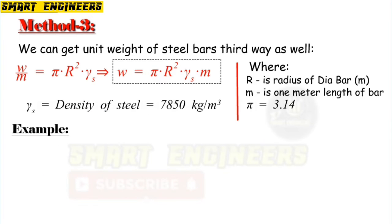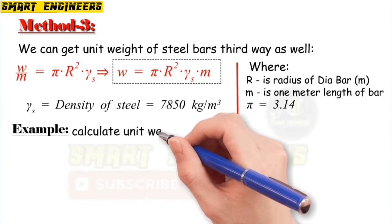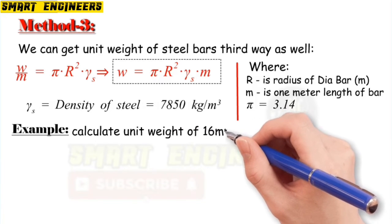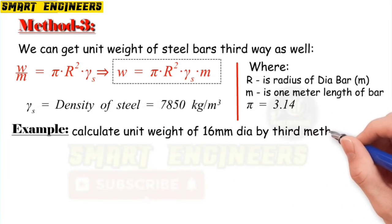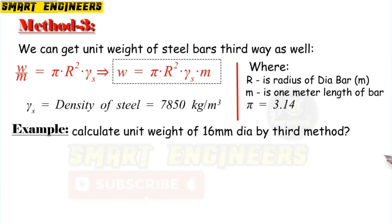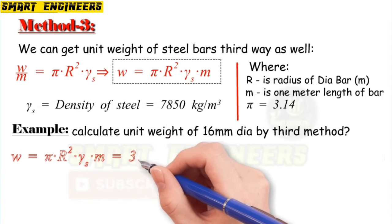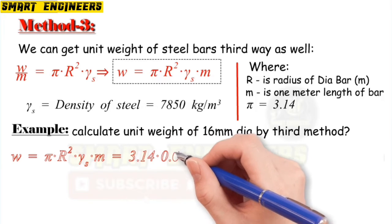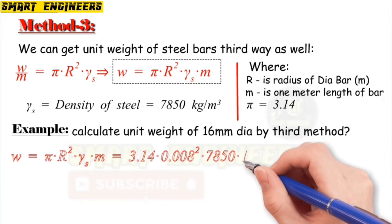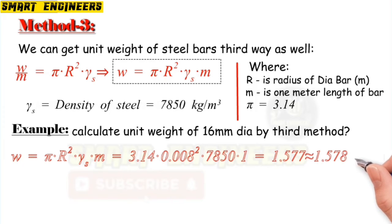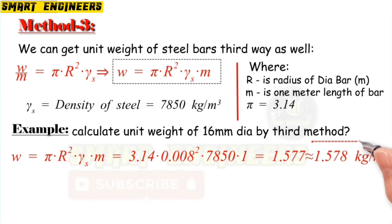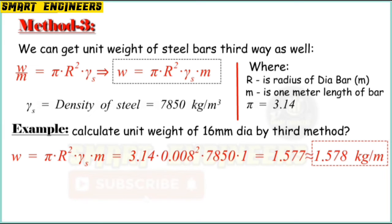To understand better, let's follow another example for the 16 millimeter dia bar. Calculate the unit weight per 16 millimeter bar steel by the third method. We have the formula: W = π × r² × γs × m. We will put the necessary values in the formula and get the result, which equals to 1.577, approximately equal to 1.578 kilogram per meter length.